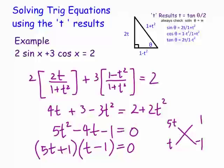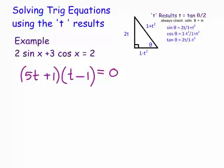So t equals −1/5 or t equals 1. Now, as noted in the summary box — always check the solution θ = π. When θ = π, tan(θ/2) would be undefined, which is why we always substitute the angle value of pi to make sure we haven't missed that solution.